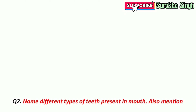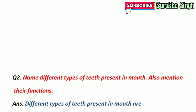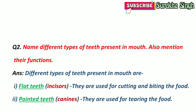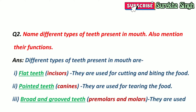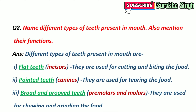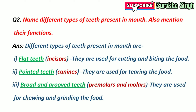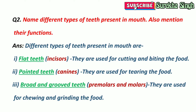Question 2: Name the different types of teeth present in the mouth and mention their functions. 1. Flat teeth, also known as incisors — used for cutting and biting food. 2. Pointed teeth, known as canines — used for tearing food. 3. Broad and grooved teeth, known as premolars and molars — used for chewing and grinding food.